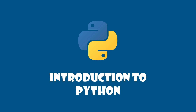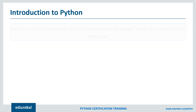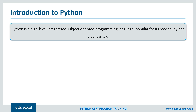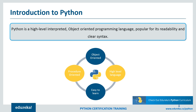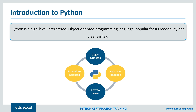Python is a general purpose programming language which has become very popular among developers. Python is a high level interpreted language, which means it does not require any compilation, just like PHP or JavaScript. Python has very clear syntax and readability which makes it very easy to learn — almost as easy as writing in simple English.